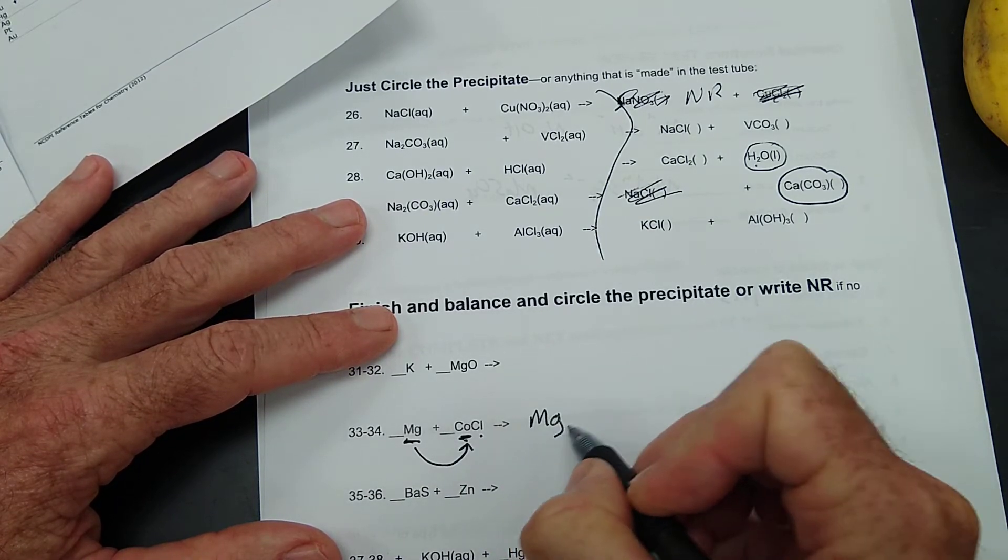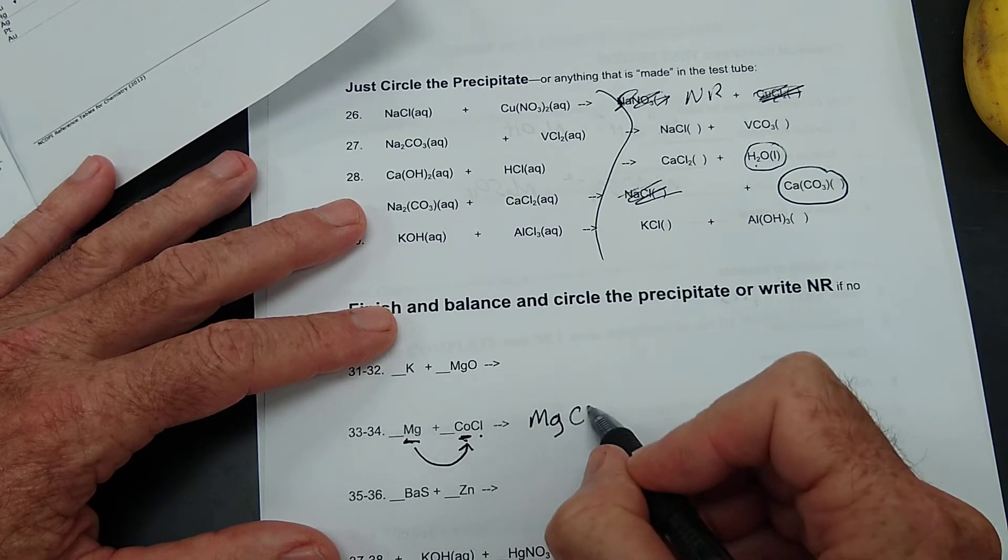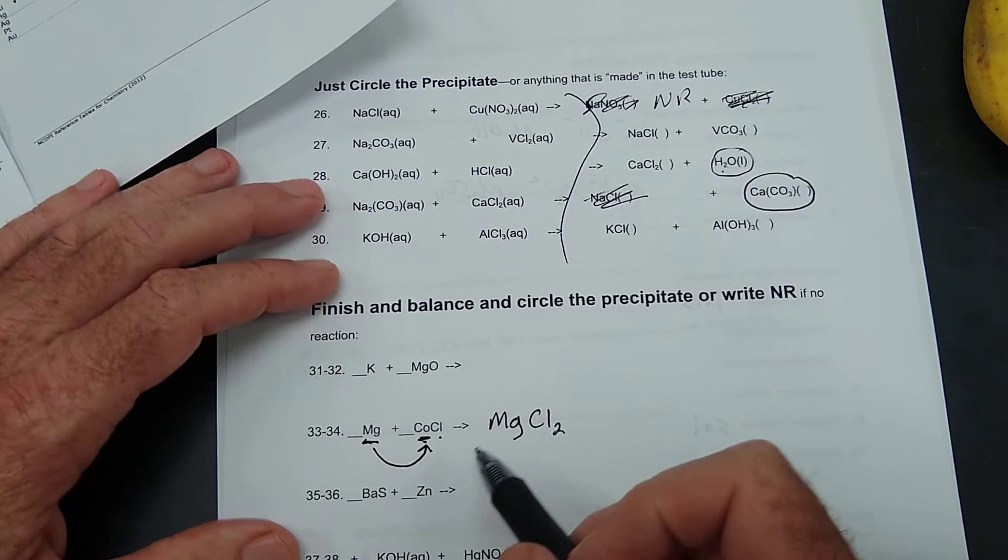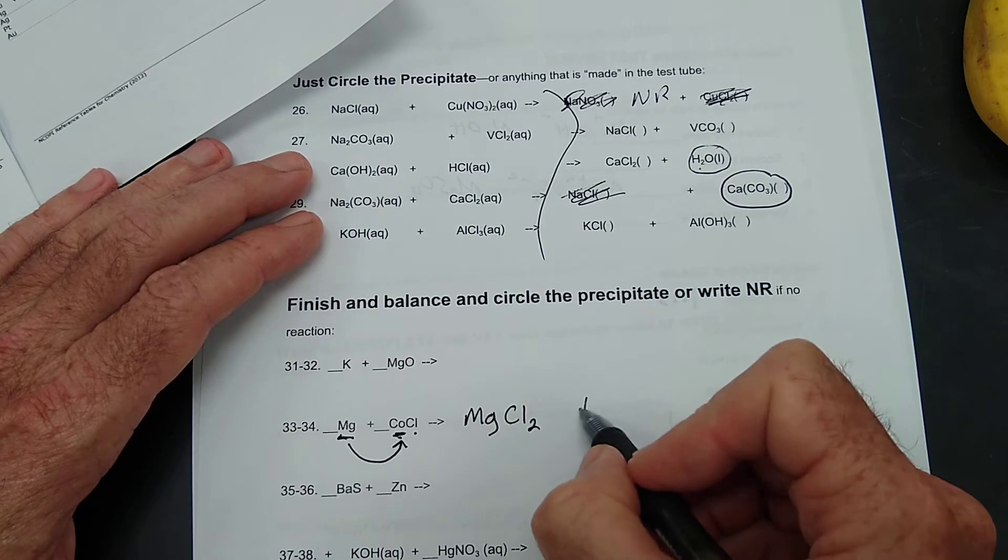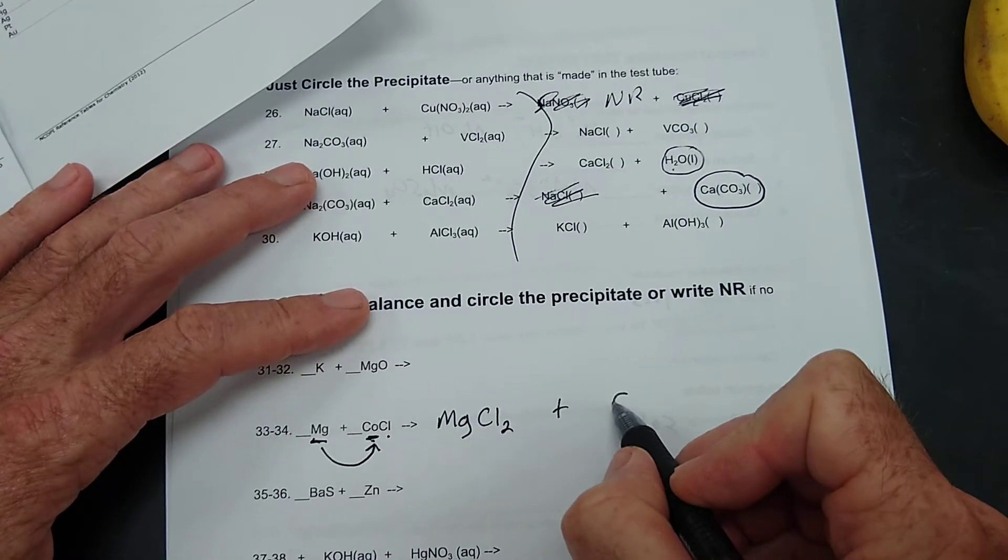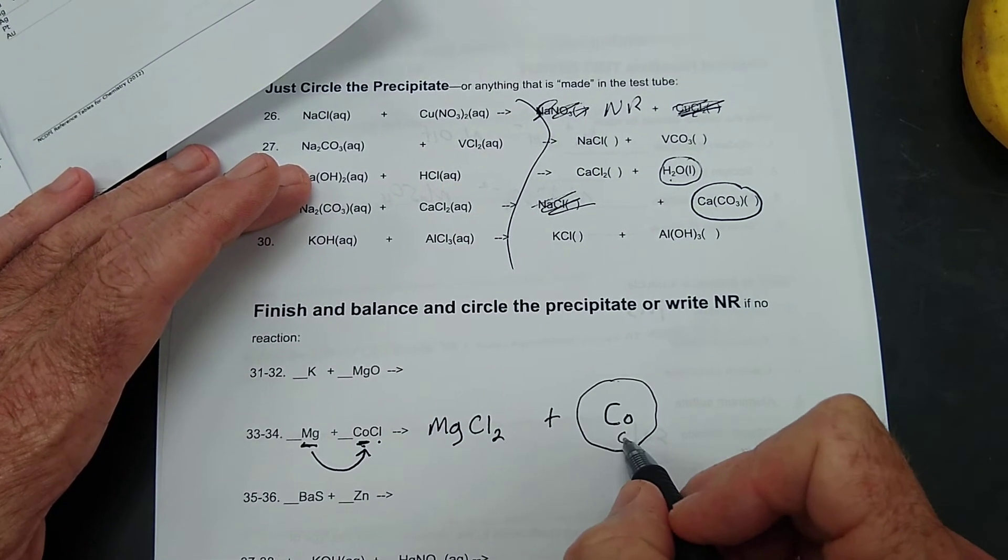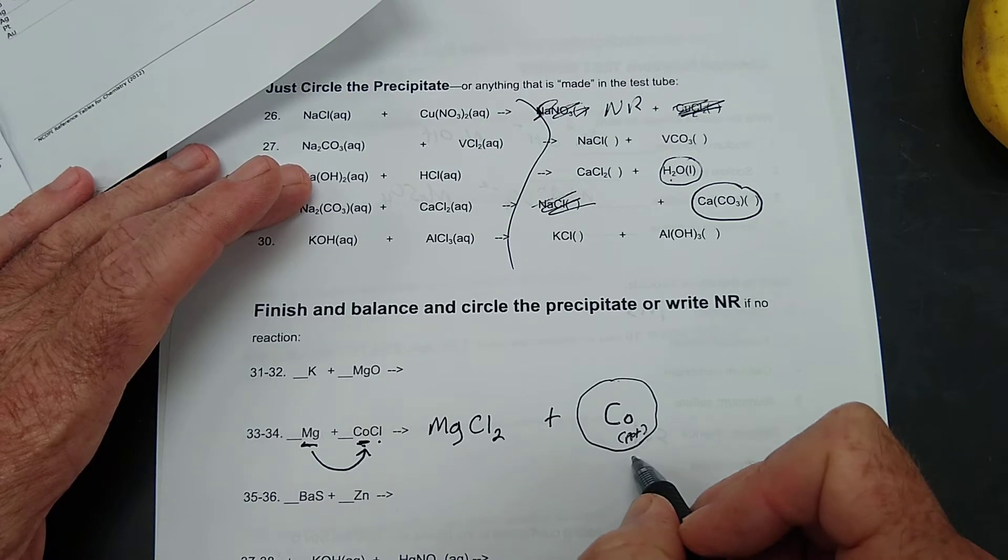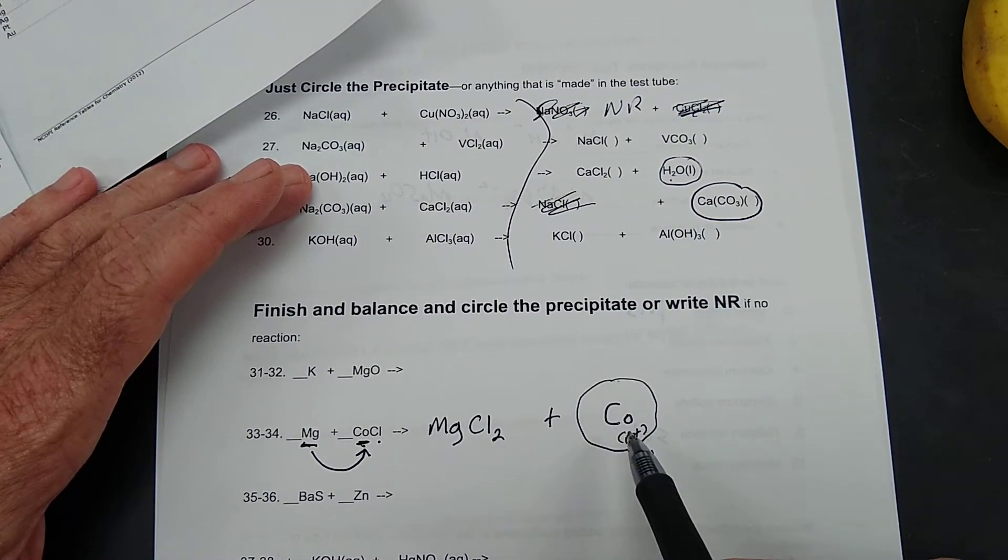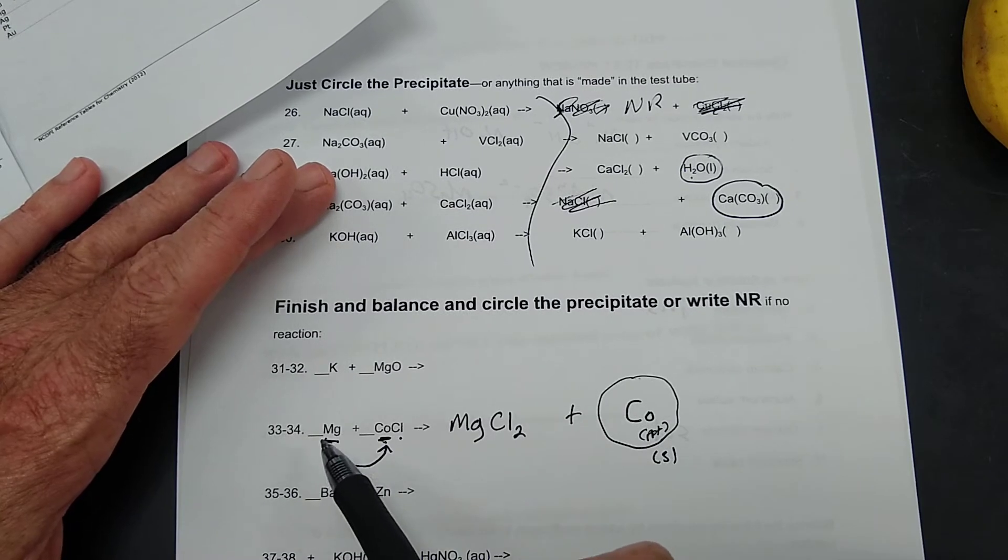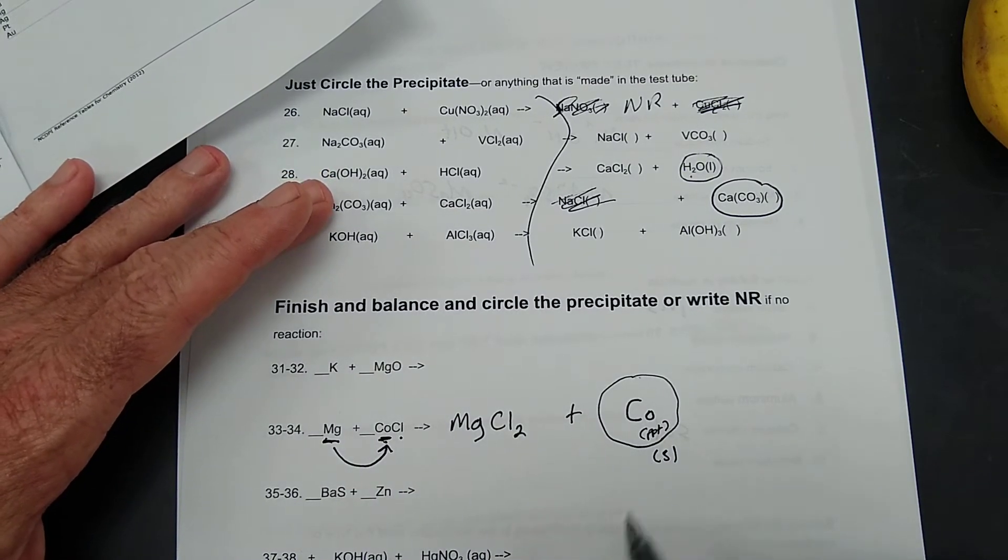So it's going to have magnesium. The formula for magnesium and chlorine is MgCl2. Right? Because magnesium is plus two, chlorine is minus one. And then now it leaves our cobalt by itself. So that is the precipitate or a solid. You could just put solid if you want to. You would see that metal in the water. The magnesium you put in there would disappear, and then you would see the cobalt appear.